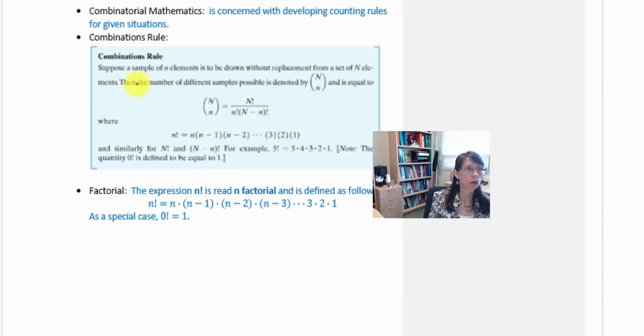For the combinations rule we are supposing that we have n elements to be drawn without replacement from a set of N elements. So the capital N represents the total number of elements in the set, whereas the lowercase n tells us how many elements we're choosing or wanting to draw without replacement.